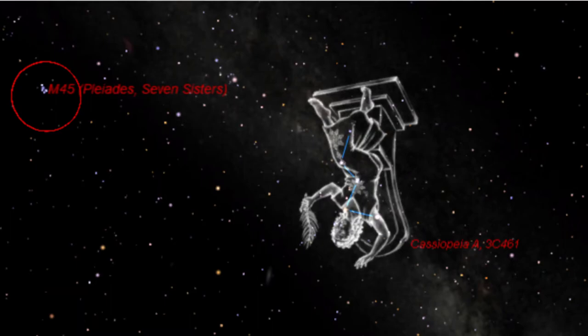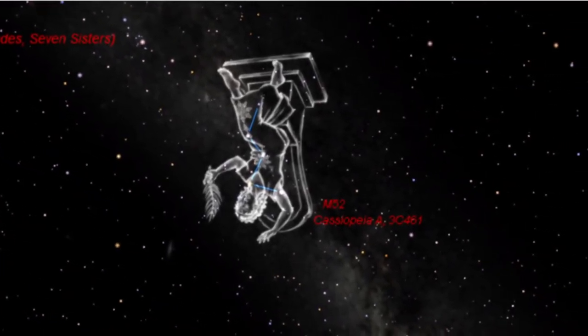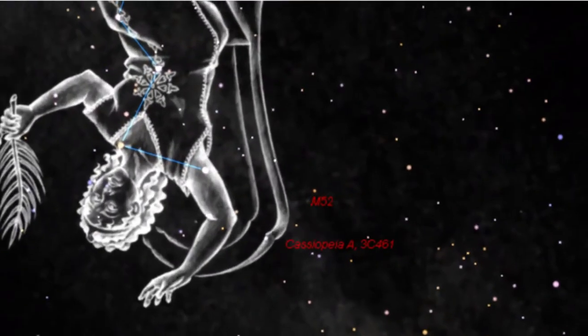Within the constellation of Cassiopeia, cluster M52 is at her elbow, right next to the Bubble Nebula.